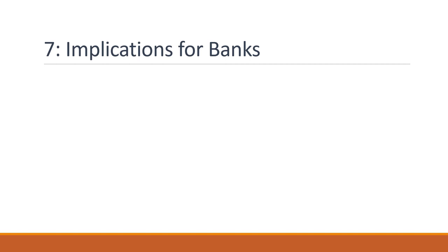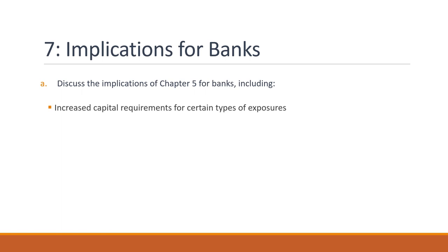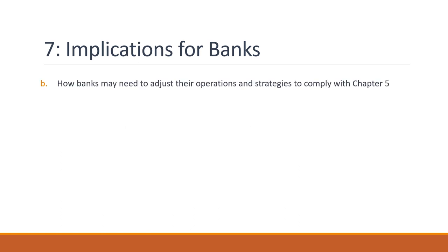Now that we have a better understanding of the requirements of Chapter 5, let's discuss the implications for banks. Compliance with Chapter 5 will likely result in increased capital requirements for certain types of exposures. Banks will also need to make changes to their credit risk management practices and internal models to comply with the new requirements. Banks may need to adjust their operations and strategies to comply with Chapter 5 of the capital adequacy requirement 2023 for Canada Banks in the following ways.